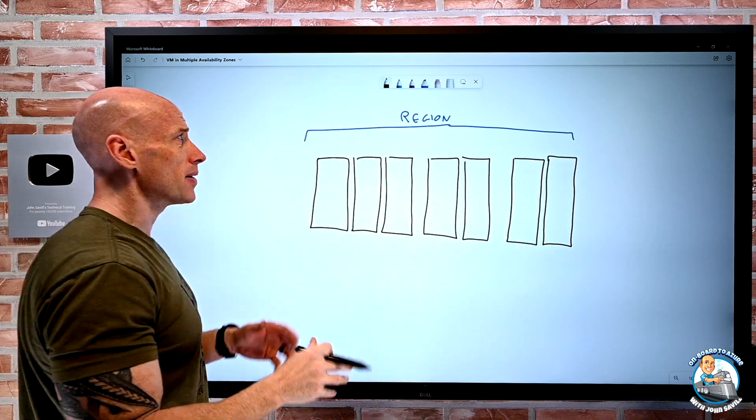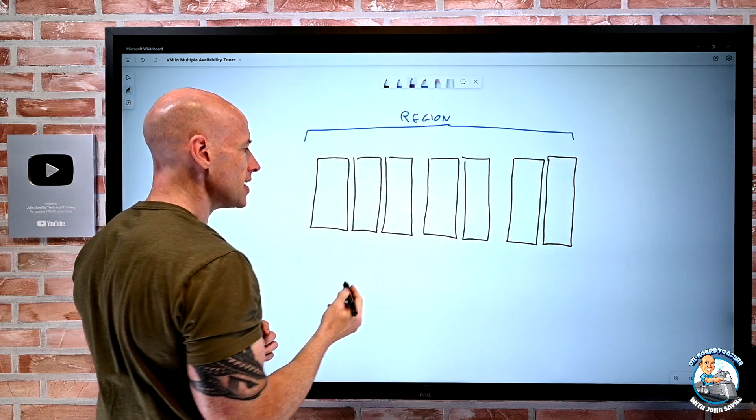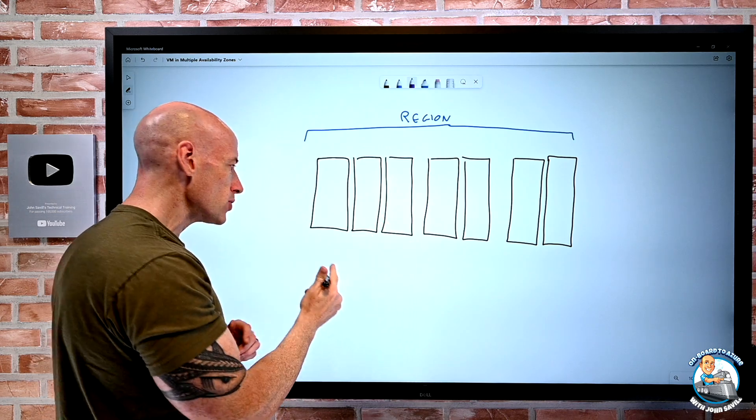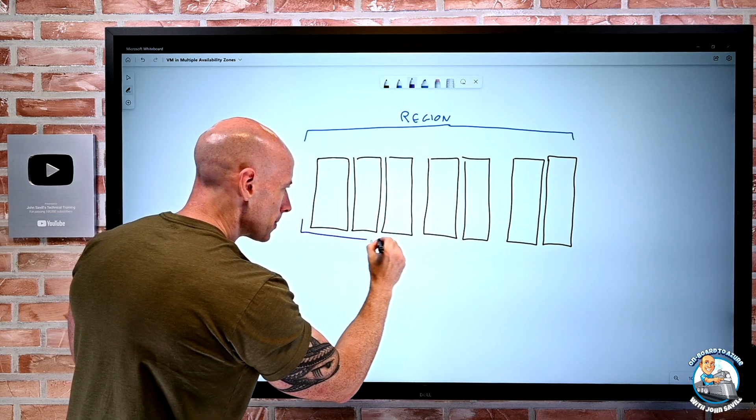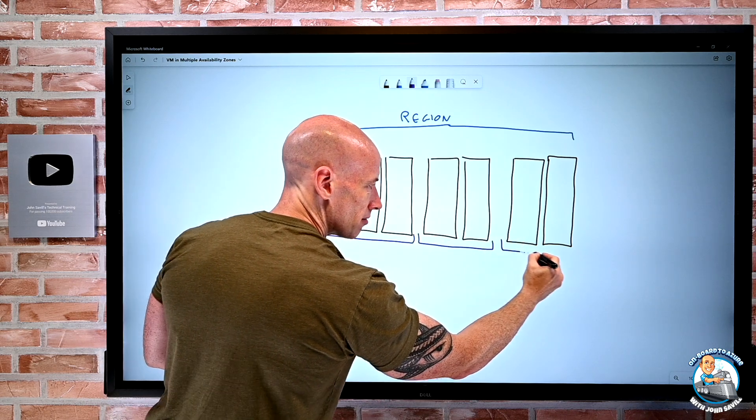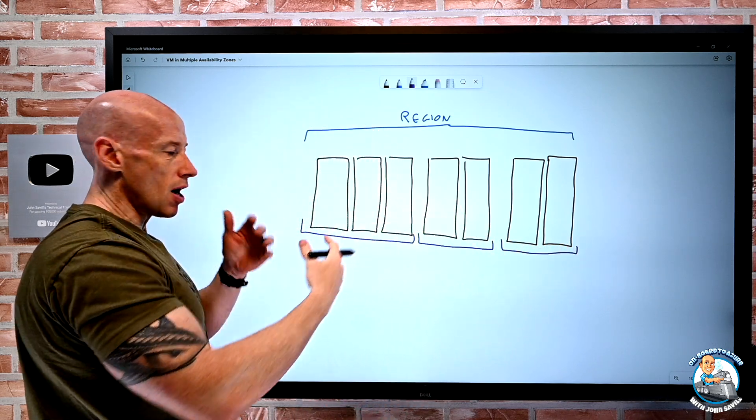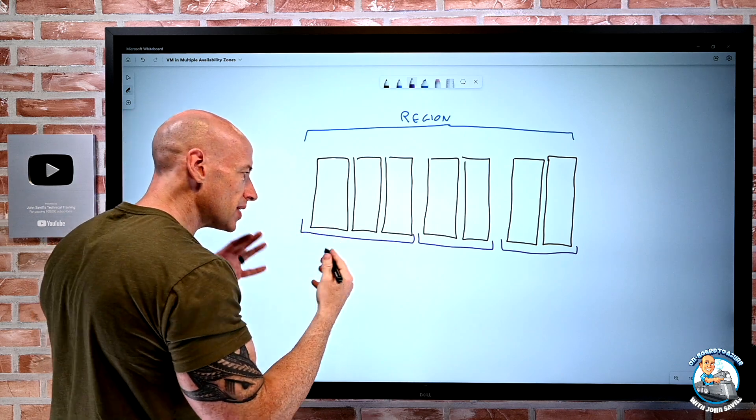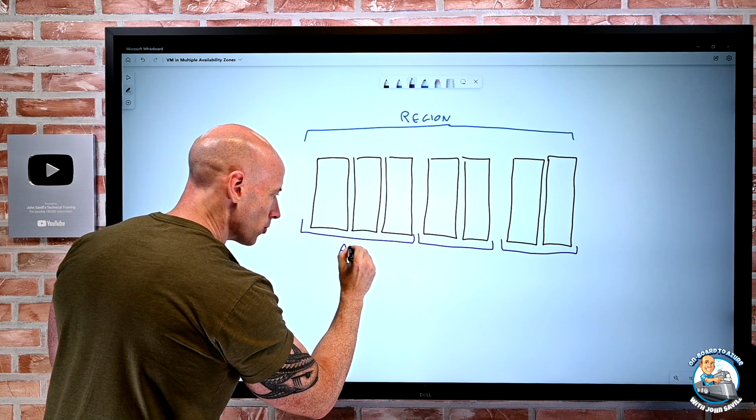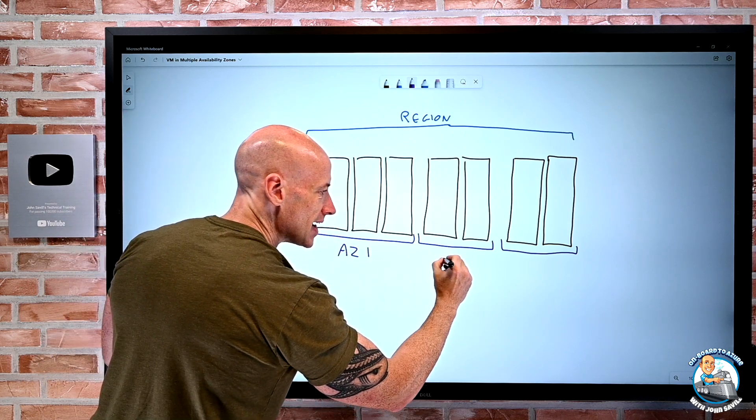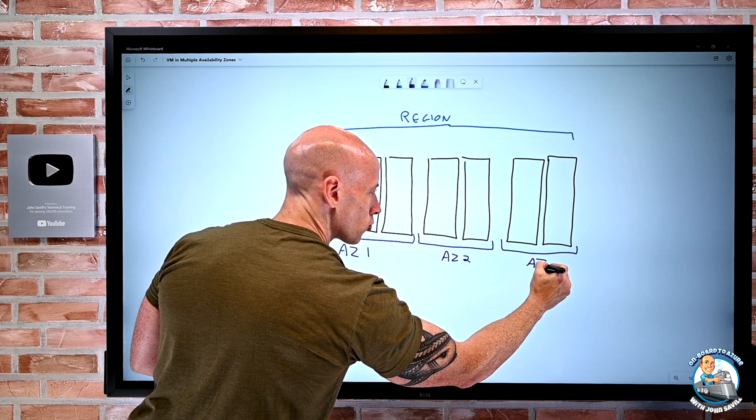And so what also happens is there's this idea of grouping sets of those data centers and I've just used three for one, two for one. It might be more data centers. It might be less. But they get grouped into these availability zones. Now, I'm writing it as AZ1, AZ2, AZ3.